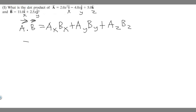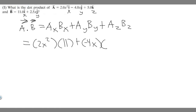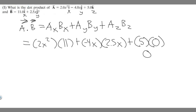So essentially it's going to be equal to A sub x, which is 2x squared, times the x component of the second vector, which is 11, plus A sub y, which is minus 4x, multiplied by the y component of your second vector, which is 2.5x, plus the z component, which is the thing in front of the k, which is 5, times zero since there's no k term in the second vector. So we're just adding zero there.